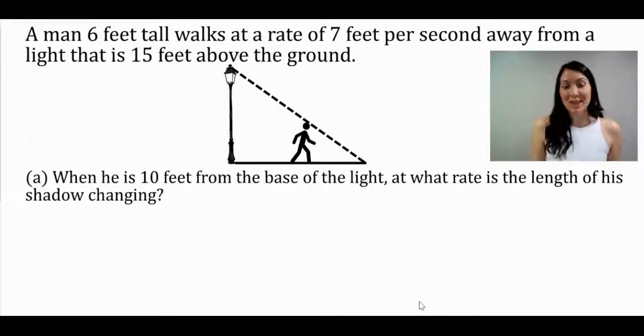A man six feet tall walks at a rate of seven feet per second away from a light that is 15 feet above the ground.